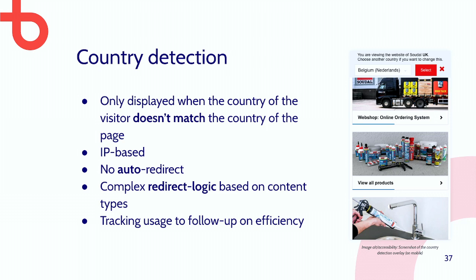For example, if somebody from the Netherlands who speaks Dutch types something in Google, they might land on the Belgian website because that is Dutch as well. Sometimes Google just gets it wrong. So whenever the IP address of the visitor doesn't match the market currently shown, a modal is displayed saying: we see you are located in Belgium, would you like to switch to the Belgian market and see the same content? This is something very useful.